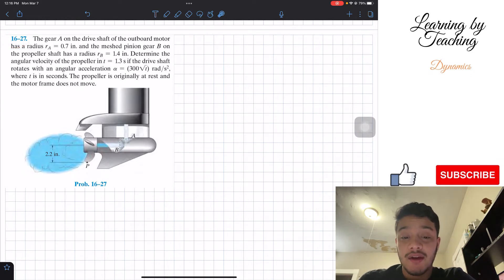It says the gear A on the drive shaft of the outboard motor has a radius RA equals 0.7 inches and the mesh pinion gear B on the propeller shaft has a radius RB equals 1.4 inches.